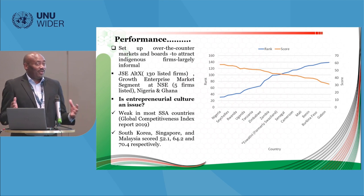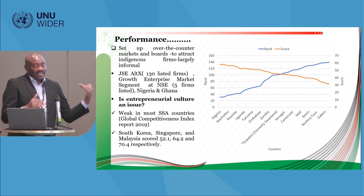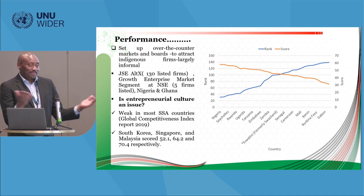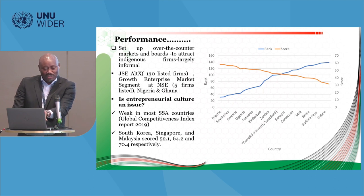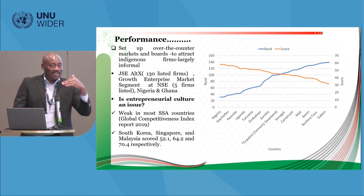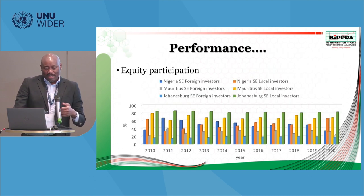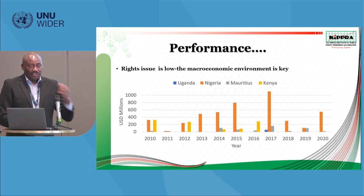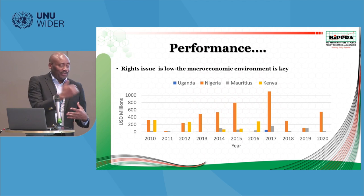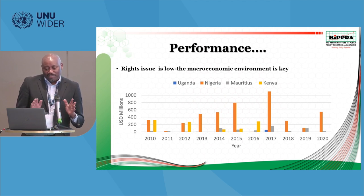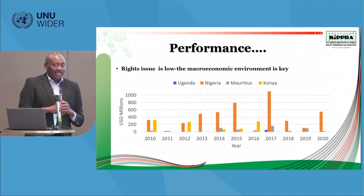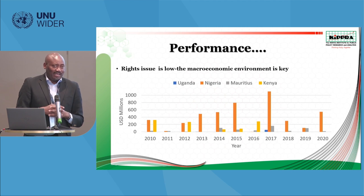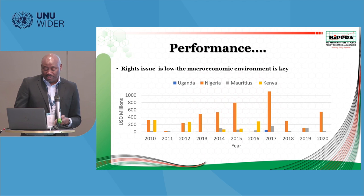Governments are doing a lot to support the growth of MSMEs, but firms are still struggling. In Kenya, these firms tend to die before their third birthday. Comparing with South Korea, Singapore, and Malaysia, their entrepreneurship culture scores are higher. On rights issues — which are important because they give listed firms an opportunity to raise additional funds — we found levels very low in most countries, with firms not using this window to raise additional funds.